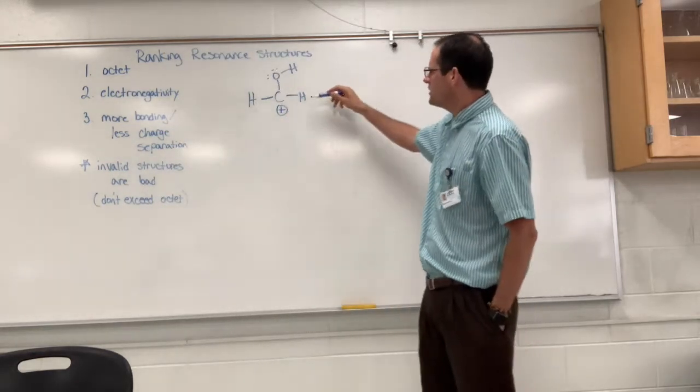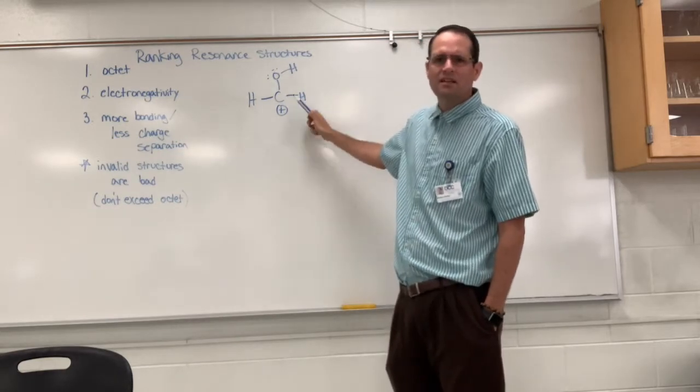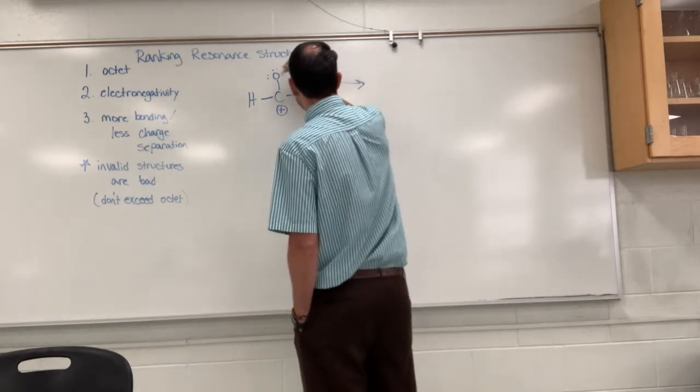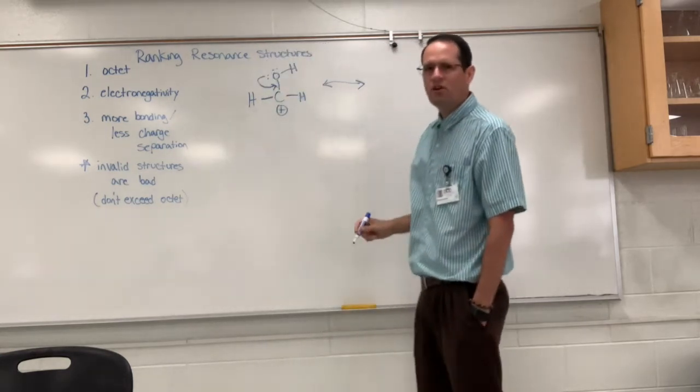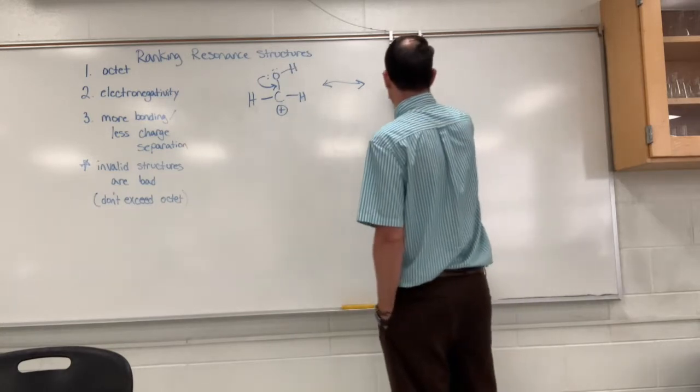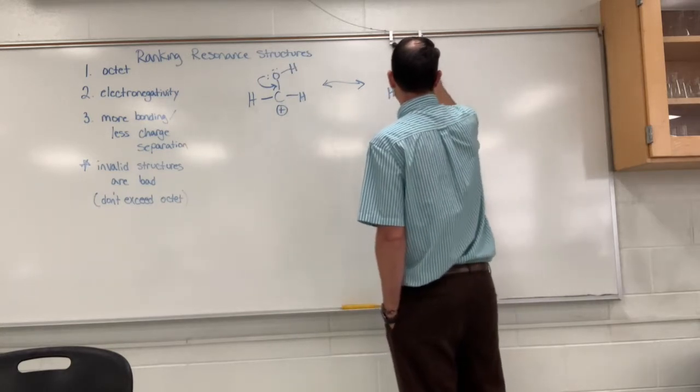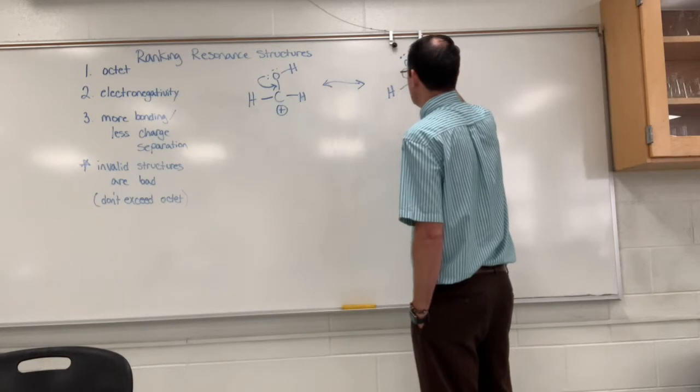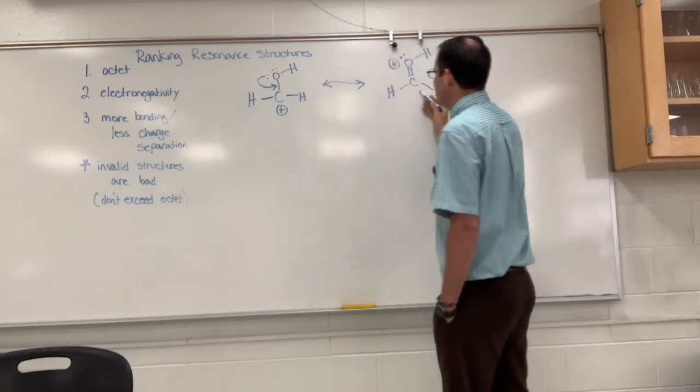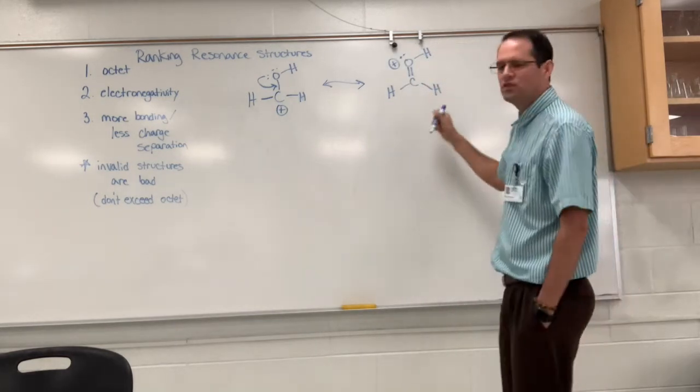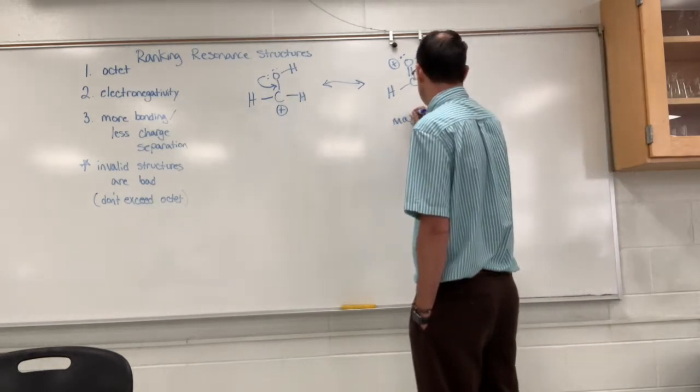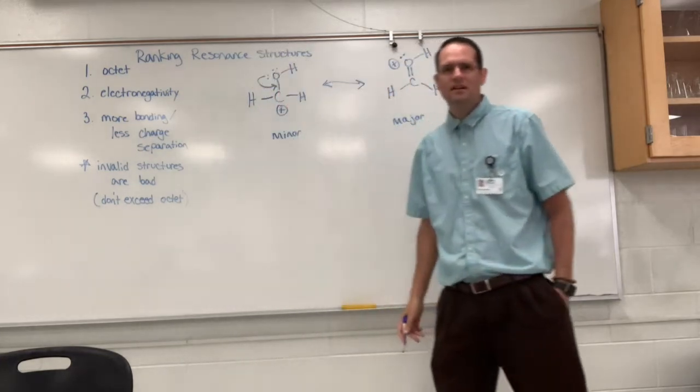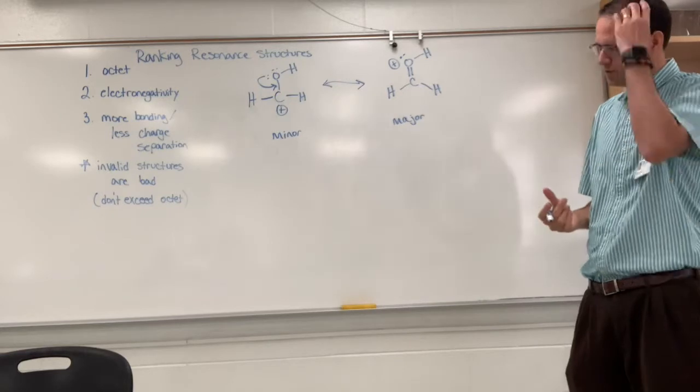Let's look at this particular structure. Carbon has only six electrons; it does not have an octet. If we generate and draw an additional resonance structure, we can see that carbon here has an octet. So we would say this is the major contributor and this is the minor contributor. This particular example only has two structures.